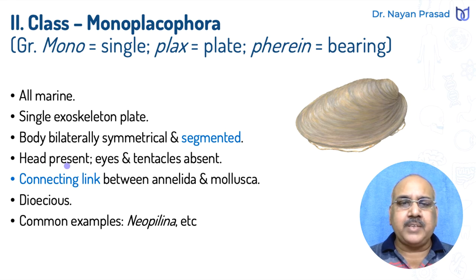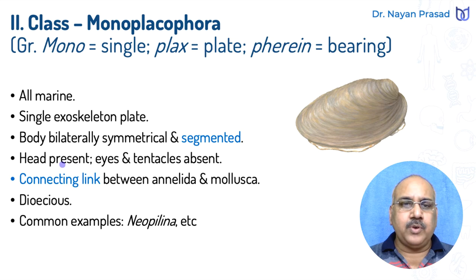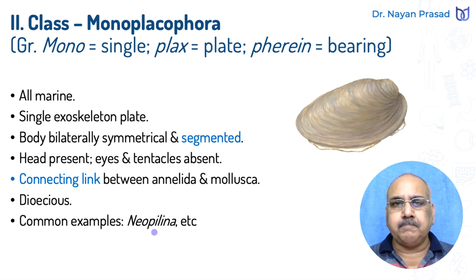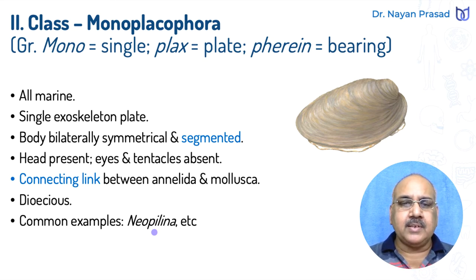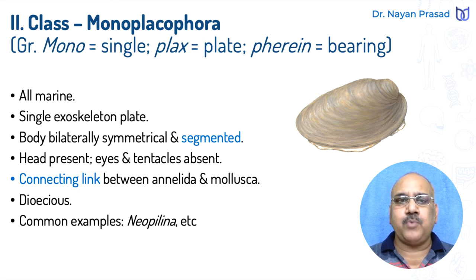Remember, in Mollusca most members are unsegmented — we have seen in general characters that body is unsegmented. But here, segmentation is still found. And due to this segmentation, it is supposed to be a link between Annelida and Mollusca. Remember, annelids are with segmented body. So Monoplacophora are supposed to be a connecting link between Annelida and Mollusca. Here head is present, but eyes and tentacles are absent. These are sensory structures. Head present, but these sensory structures are absent. And these are dioecious — sexes separate. Common example: Neopalina, which from the classification point of view is an important group representing a connecting link between Annelida and Mollusca.